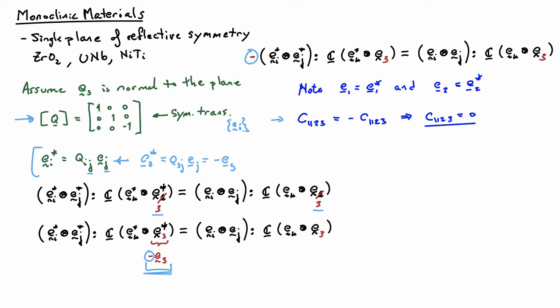That tells me C1123 is equal to zero, because I have a number here and it's equal to its algebraic opposite. The only number that's equal to its algebraic opposite is zero.